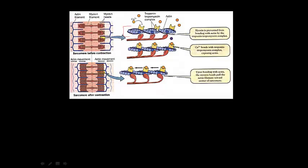At rest, the myosin is not bound to the actin. Calcium is key to this process. The reason the active site is closed at rest is because the calcium is in the sarcoplasmic reticulum. What's going to open that active site is going to be the presence of calcium. So calcium is going to play a key role in this process of muscle contraction.